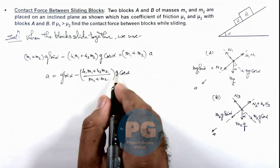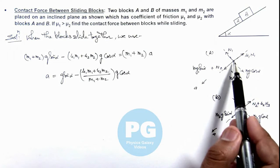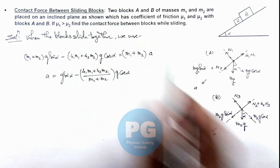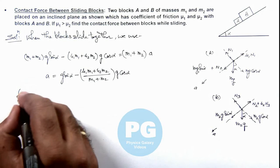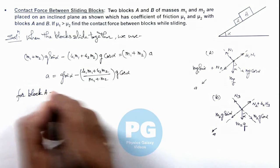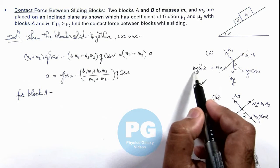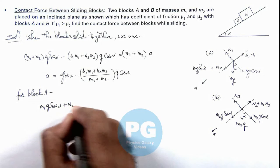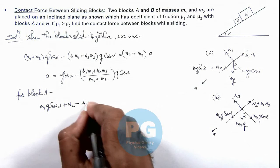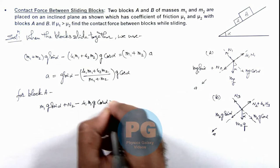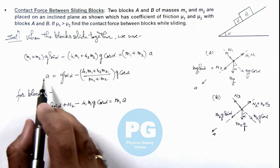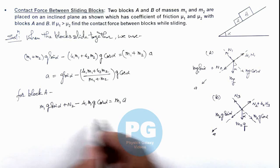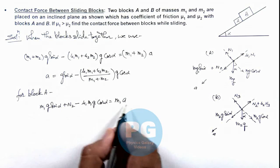Having obtained the acceleration, we write the equation of motion for block A individually to get the value of N2, which is the contact force between the blocks. For block A, the net force equation is: m1*g sin(alpha) plus N2 minus mu1*m1*g cos(alpha) equals m1 times a. We now substitute the value of acceleration into this equation.